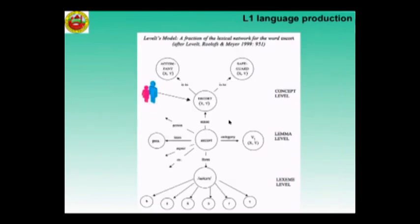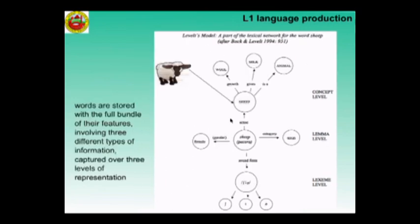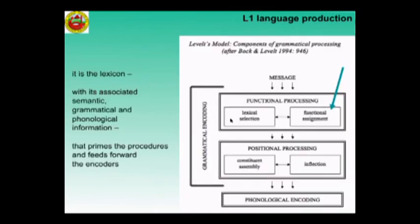Here is the same representation for a verb. Within the formulator, crucial in building up the sentence is the functional assignment, the functional processing. It is the lexicon, with its associated semantic, grammatical, and phonological information, that primes the procedures in the formulator and feeds forward the encoder. Functional assignment is crucial — it creates the syntactic environment for the word.